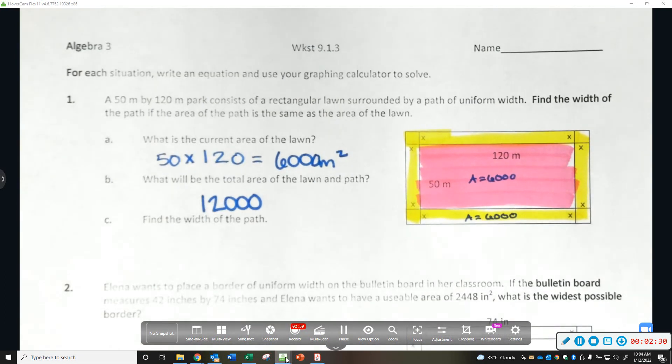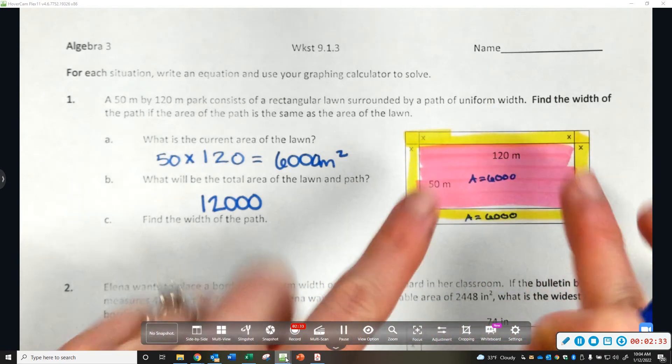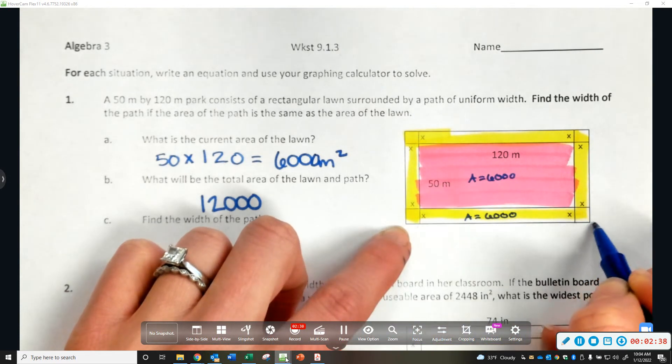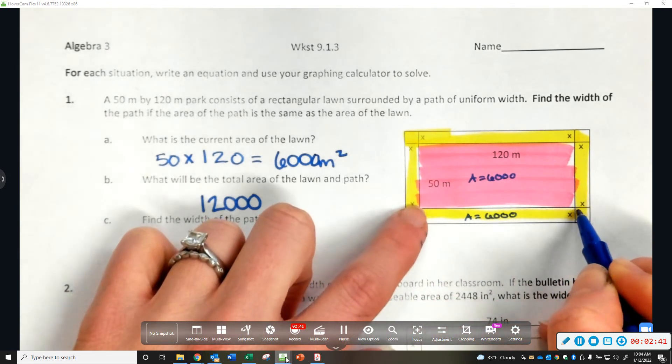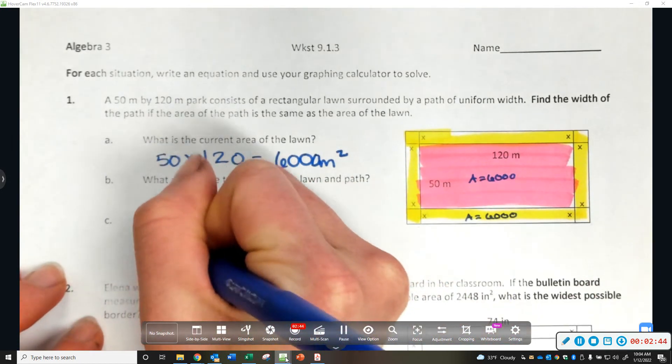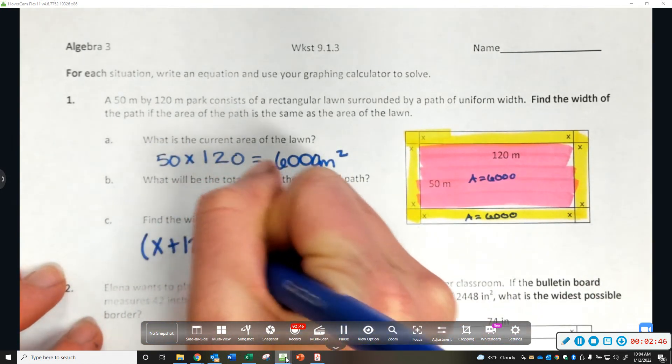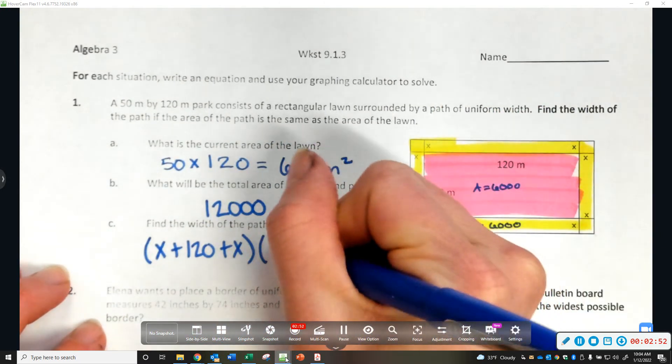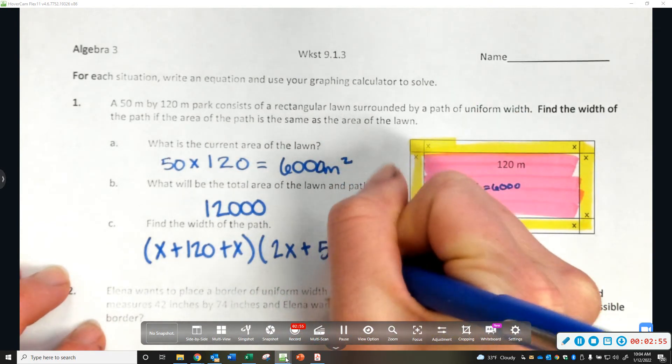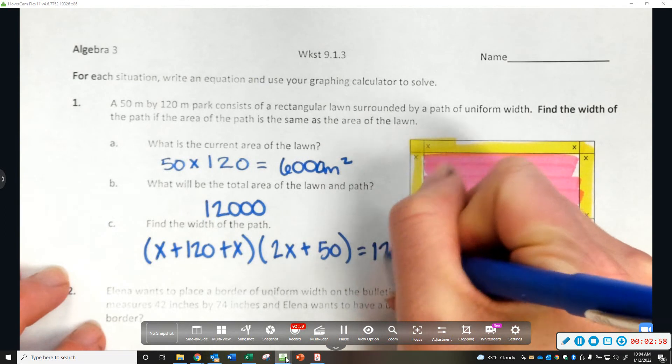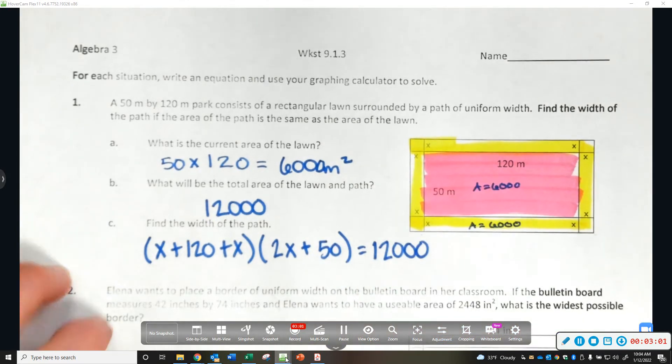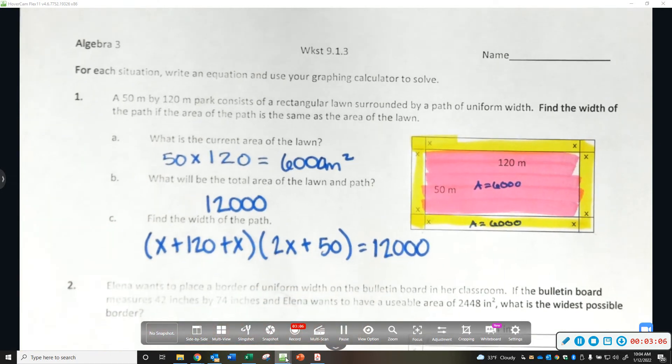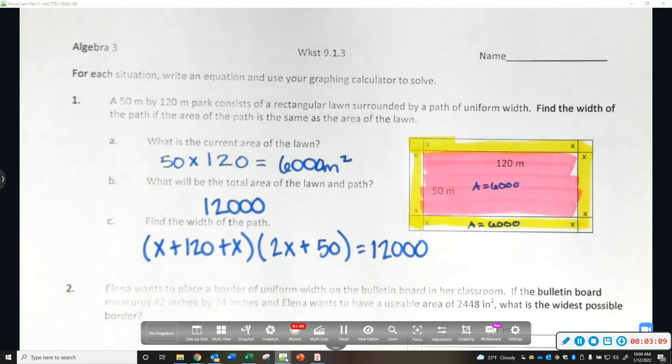So now, we need to figure out the dimensions. This little piece is x, this little piece is x, and this middle piece is 120. So that means x plus 120 plus x. We could also say x plus x is 2x, so 2x plus 50 equals 12,000. I don't care which way you write it. If you want to combine like terms, that's fine.